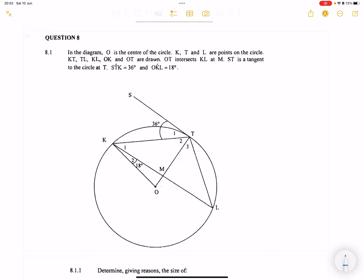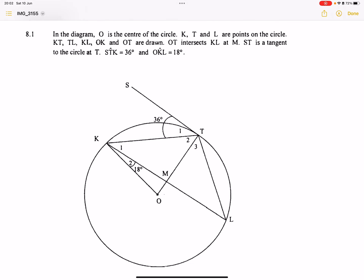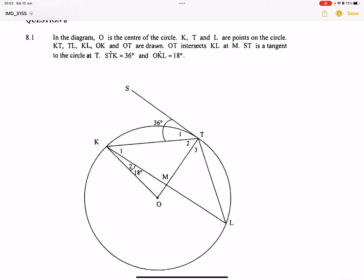They say in the diagram, O is the center of the circle. I like working inside the diagram as I read the information. I'm going to indicate that if O is the center, then OT would be equal to OK because they are radii.